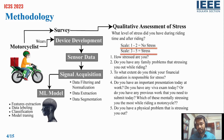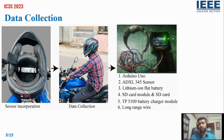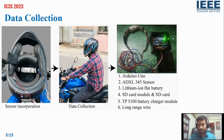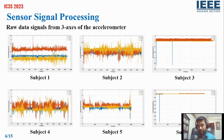We collected data using an Arduino Uno and an ADXL345 accelerometer sensor and related components. As you can see on the left side of the picture, we incorporated the sensor into the helmet, and the middle picture shows the participant who transmitted their data into our system. Those are the raw signals we collected from six participants.